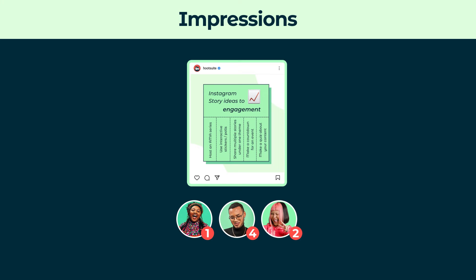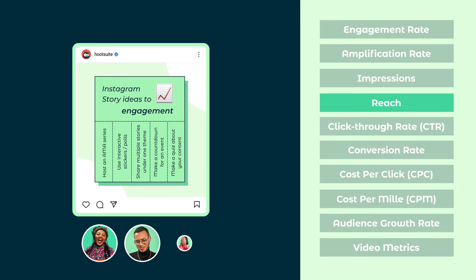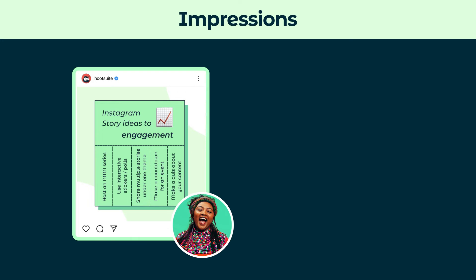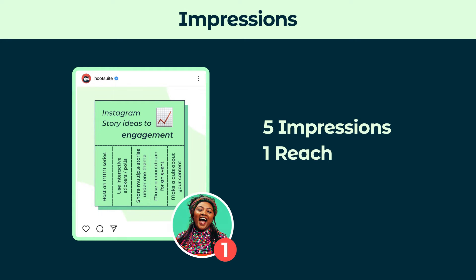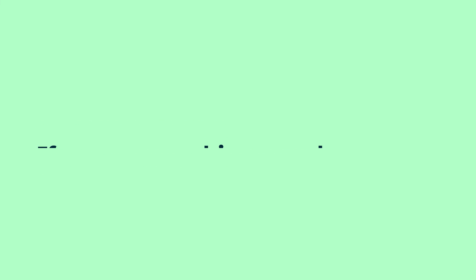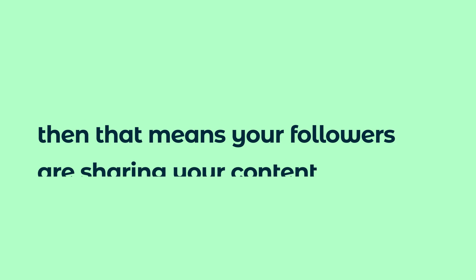While impressions show how many times one person sees your post, reach is the total number of unique people who see your post — each user counts as one reach. For example, if a social media user sees your post five times throughout the day, it would be considered five impressions and one reach. Take note of who your content is reaching. If you're reaching people who don't follow you, then that means your followers are sharing your content — a great outcome!